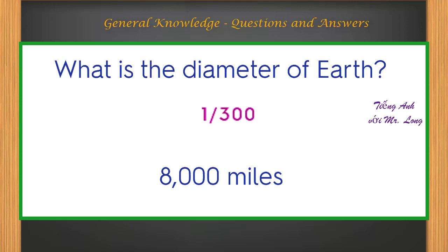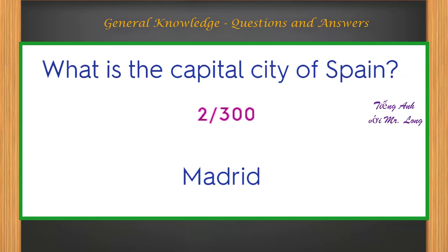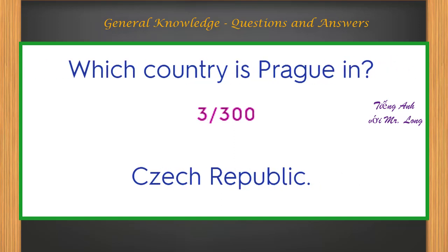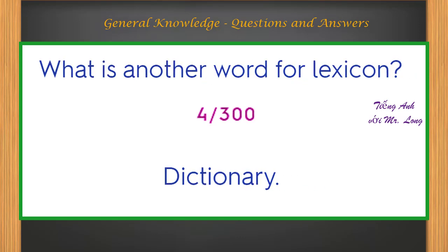What is the diameter of Earth? 8,000 miles. What is the capital city of Spain? Madrid. Which country is Prague in? Czech Republic. What is another word for lexicon? Dictionary.